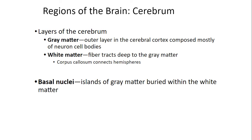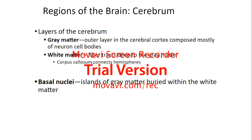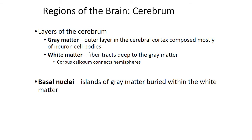Gray matter is the neuron cell bodies; white matter is the axon tracks. The corpus callosum connects the left hemisphere of the brain to the right hemisphere, which is very important — that's how both sides of the brain communicate with each other. You're going to hear that term a lot, and you should understand what it is and where it's located.